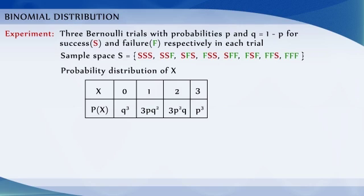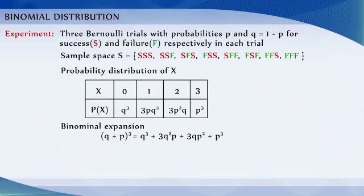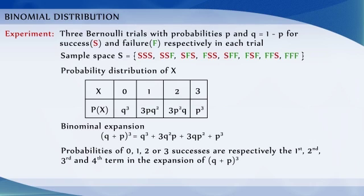We know the binomial expansion of (q+p)³ is q³ + 3q²p + 3qp² + p³. The probabilities of 0, 1, 2, or 3 successes are respectively the first, second, third, and fourth terms in the expansion of (q+p)³. If p+q equal to 1, the sum of these probabilities is also 1.